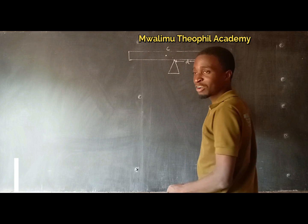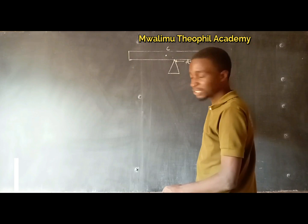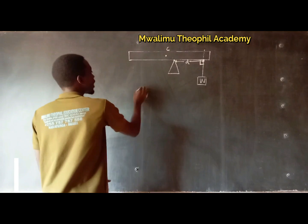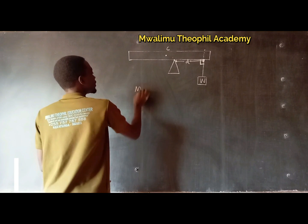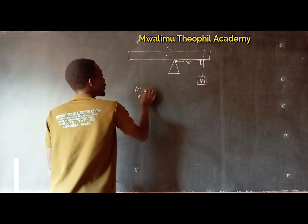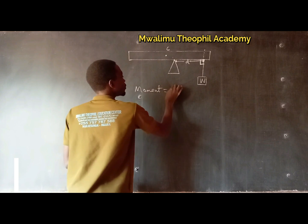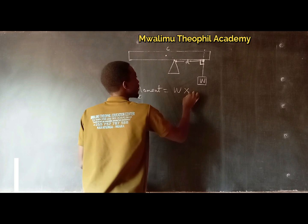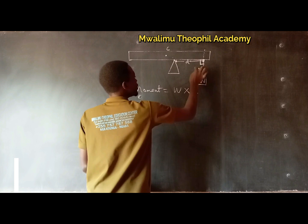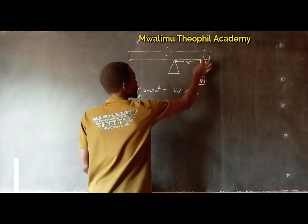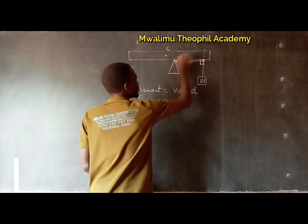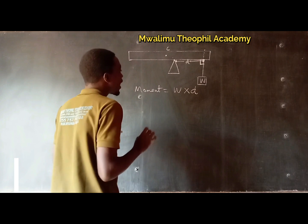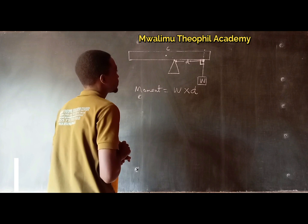Now, according to the definition of moment of a force, our moment here will be equal to the force W times its perpendicular distance D1 — that is, force times perpendicular distance from the turning point to the line of action of the force. I hope you have understood the concept.